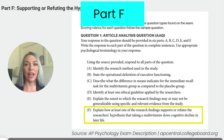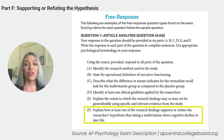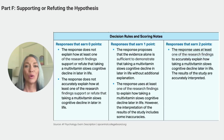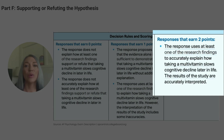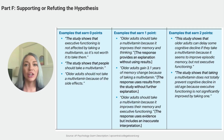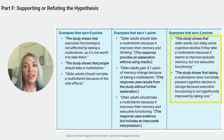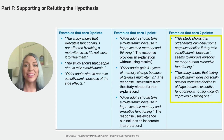Finally, Part F asks us to explain how the findings support or refute the researchers' hypothesis that taking a multivitamin slows cognitive decline in later life. Part F is worth two points. To get both points, the response must use at least one of the research findings to accurately explain how taking a multivitamin slows cognitive decline later in life, and the results must be accurately interpreted. You could say that this study shows that older adults can delay some cognitive decline if they take a multivitamin, because it seems to improve episodic memory but not executive functioning. The rubric also indicates you could get full points for saying that it showed that taking a multivitamin does not totally prevent cognitive decline in old age because executive functioning was not significantly improved.